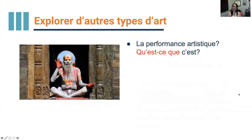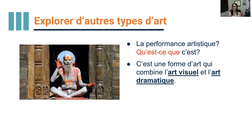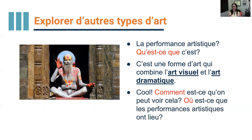La performance artistique, qu'est-ce que c'est? C'est une forme d'art qui combine l'art visuel et l'art dramatique. Comment est-ce qu'on peut voir cela? Où est-ce que les performances artistiques ont lieu? 'Où' means where, 'ont lieu' means take place — so where do they take place?